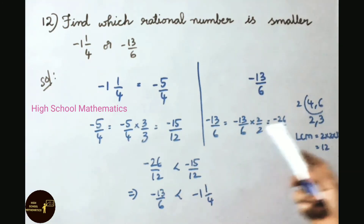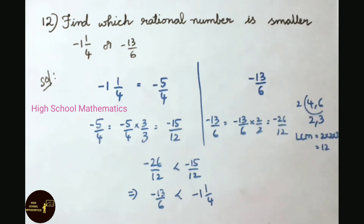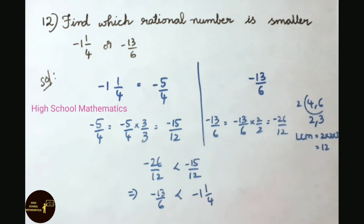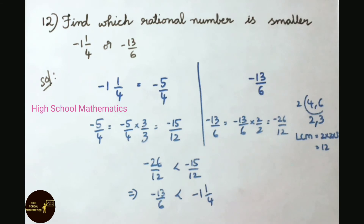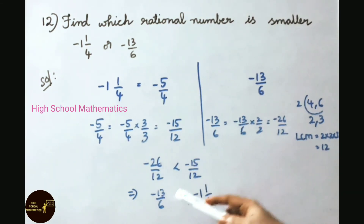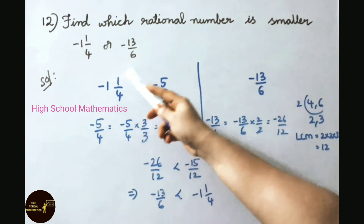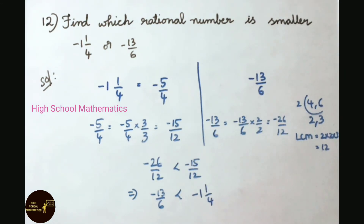Now both rational numbers have the same denominator and we can compare them. Minus 26 is less than minus 15, so minus 26 by 12 is less than minus 15 by 12. Therefore minus 13 by 6 is smaller than minus 1 and 1/4.